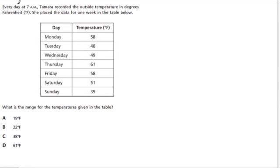So in this table, every day at 7 a.m., and here are the days, Tamara recorded the outside temperature in degrees Fahrenheit, and these are the temperatures. She placed the data for one week in the table below. What is the range for the temperatures given in the table?